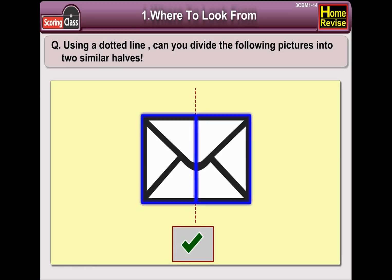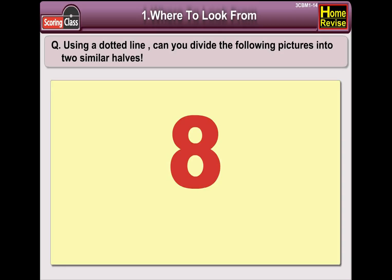Now, if you see it, this is number eight. Draw the dotted line in this way. Here comes the pair of scissors. If the dotted line is drawn vertically in this way, then we get two similar halves.